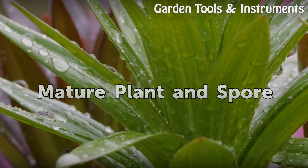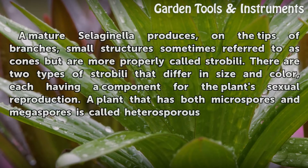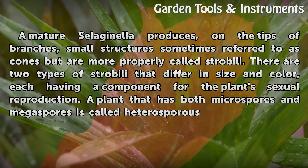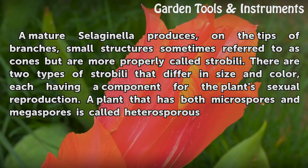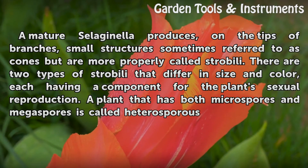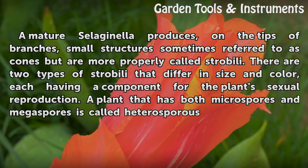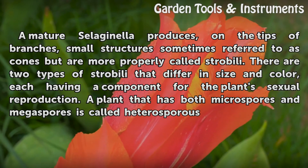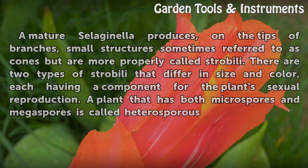Mature Plant and Spore. A mature Selaginella produces, on the tips of branches, small structures sometimes referred to as cones but are more properly called strobili. There are two types of strobili that differ in size and color, each having a component for the plant's sexual reproduction. A plant that has both microspores and megaspores is called heterosporous.